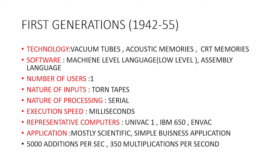In the first generation of computers, the technology used was vacuum tubes, acoustic memories, and CRT memories. Software used machine level language, which is a low level language, and assembly level language. Only one user could use it at a time.